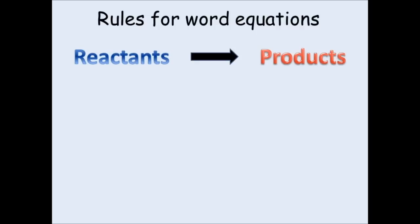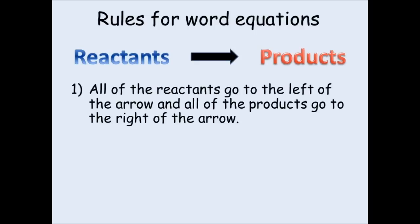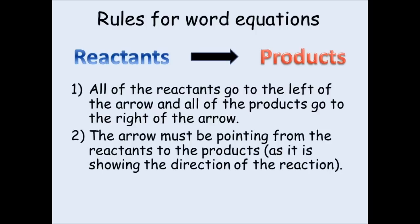So, rules for writing word equations. The first one is that all the reactants go to the left of the arrow and all the products go to the right of the arrow. Now this may seem straightforward, but we're going to come back to this one in more detail in just a second. The second rule is that the arrow must be pointing from the reactants to the products, as it's showing the direction of the reaction. What that means is you start with the reactants, you end up with the products, so the arrow must go from the reactants to the products. That means it must go from left to right.